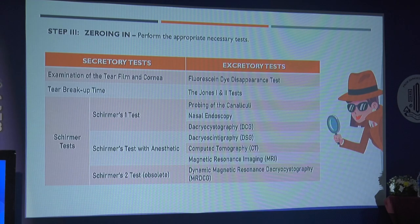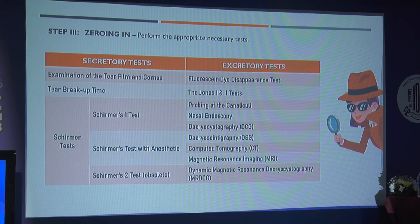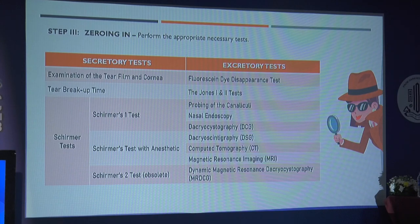Next come the tests. We have two sets: the secretory test and the excretory test. In the secretory test we have the examination of the tear film on the cornea, tear film breakup time, and the Schirmer's test. In the excretory test we have the fluorescent dye disappearance test, the Jones test 1 and 2, probing, endoscopy, and higher-end investigations like dacryocystography, dacryoscintigraphy, CT, and MRI.